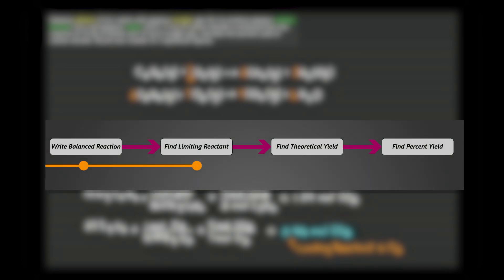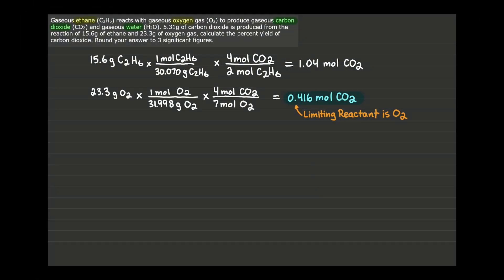The next step is finding the theoretical yield of this reaction. To find the theoretical yield, we need to convert the moles of CO2 expected to be produced by our limiting reactant back into grams. We focus on CO2 because the problem asks us to calculate the percent yield of carbon dioxide. So our product of interest is carbon dioxide, and we'll need its molar mass to determine the theoretical yield in grams.